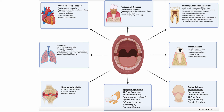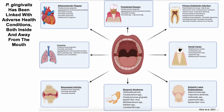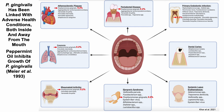What else is in the mouthwash? Porphyromonas gingivalis has been linked with adverse health conditions both inside and outside the mouth — including atherosclerotic plaque, pneumonia, arthritis, periodontal disease, Sjogren's syndrome, and primary endodontic infection. In my salivary sample, P. gingivalis represents 0.2% of my total bacteria — trending towards very low amounts.